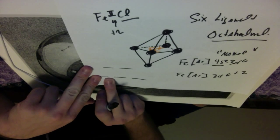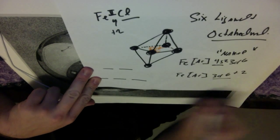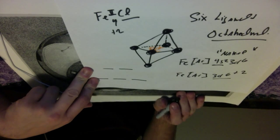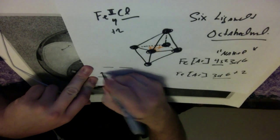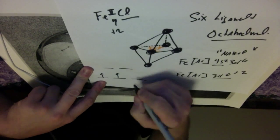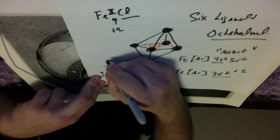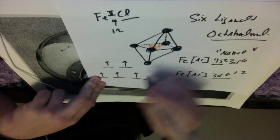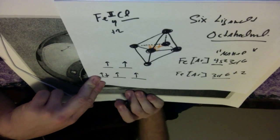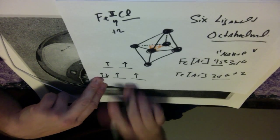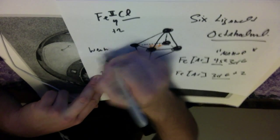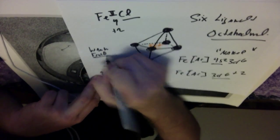So that means that the electrons are going to want to prefer to go up to the higher energy levels instead of pairing. So I've got 6 electrons that I need to account for. So let's go ahead and do that. That's 1, 2, 3. Instead of pairing up here, 4, 5, and then 6. So that would be the configuration because this is a weak field.